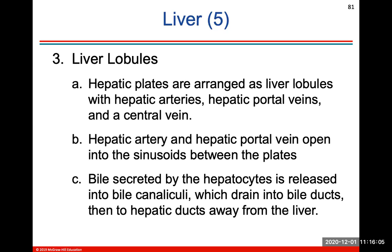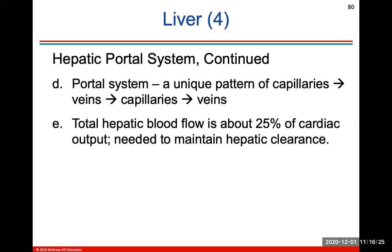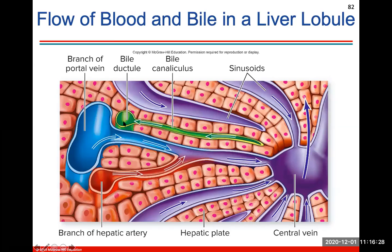The liver lobules are made up of arteries, veins, and a central vein. Bile is secreted by hepatocytes, released into bile canaliculi, which drain into bile ducts and hepatic ducts away from the liver. You can see the sinusoids in the microscopic structure — the bile ductile creates the bile, and the bile canaliculi carry the bile to the bile ductile and out the liver. The sinusoids drain everything absorbed from the blood supply of the digestive tract into the central vein.